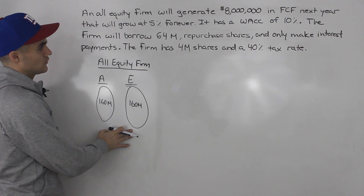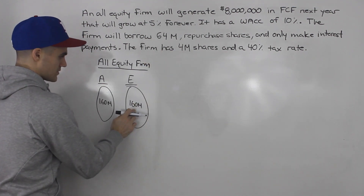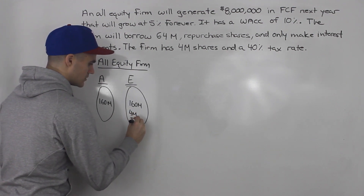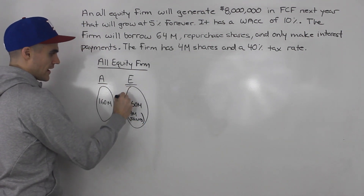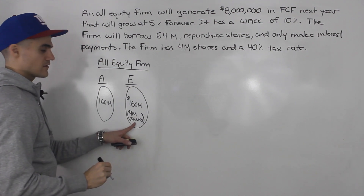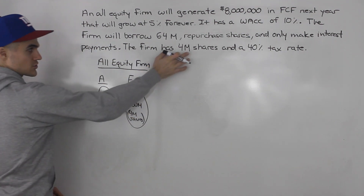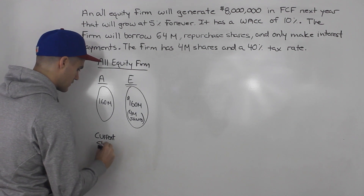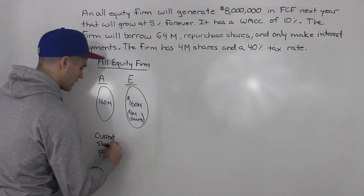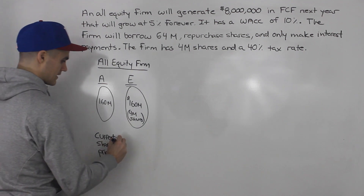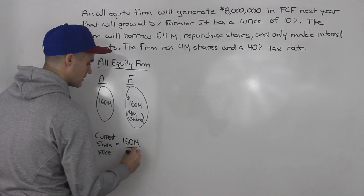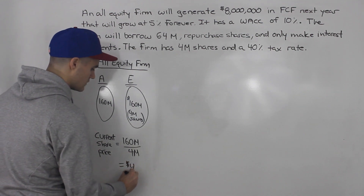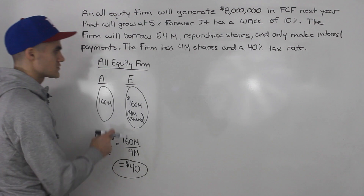We're also told this all-equity firm has 4 million shares outstanding. So the equity of $160 million is composed of 4 million shares. The current share price is therefore $160 million divided by 4 million shares, which gives a current share price of $40.